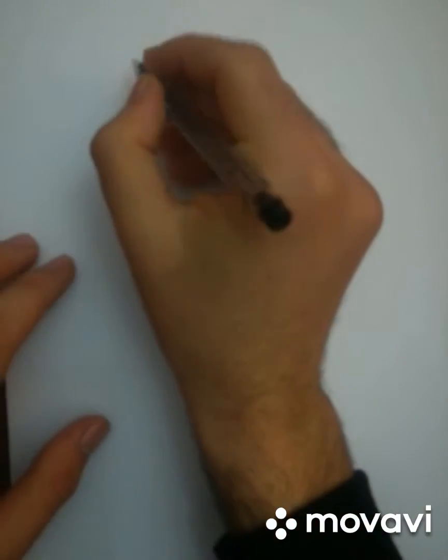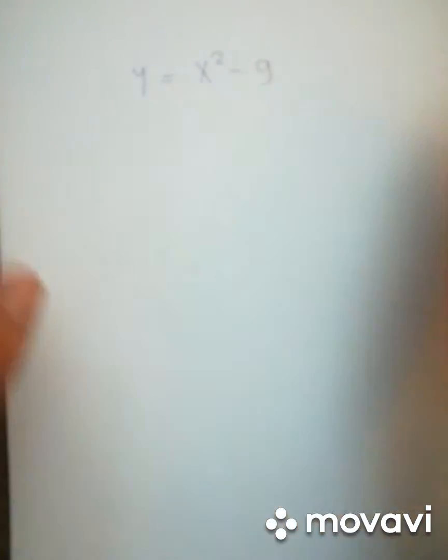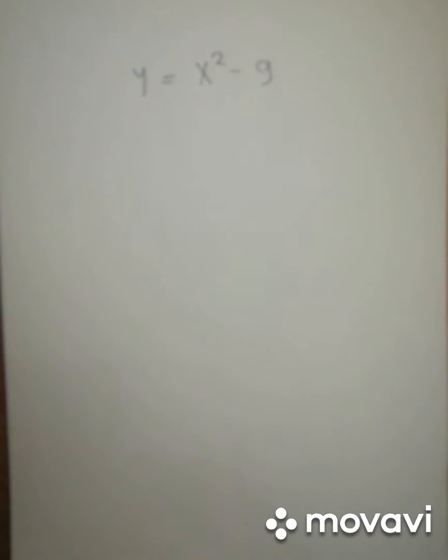What intervals is this function increasing or decreasing? So y is equal to x squared minus 9. And so in this problem right over here, we're required to find the intervals at which this function is increasing. We're also required to find when this function is decreasing and when the function is neither increasing nor decreasing.